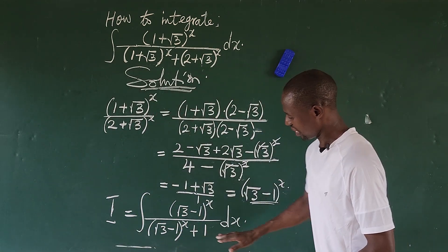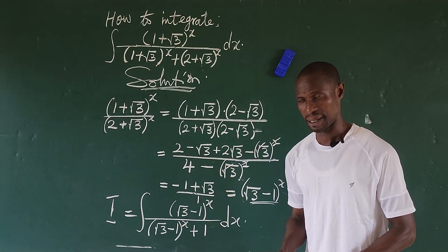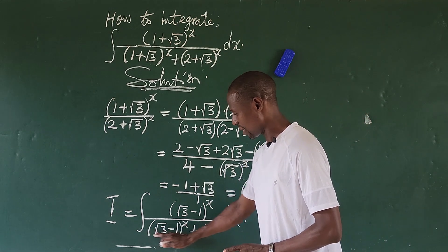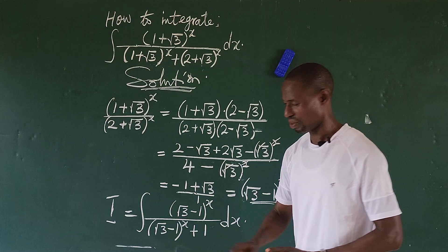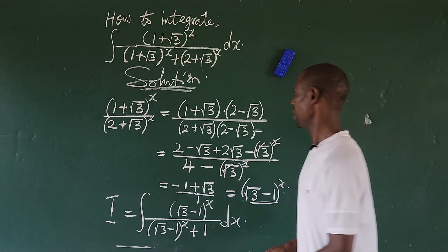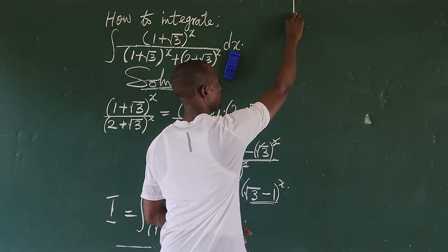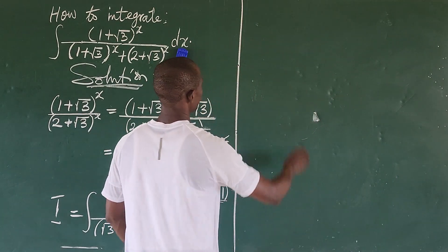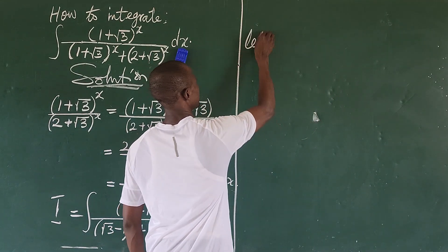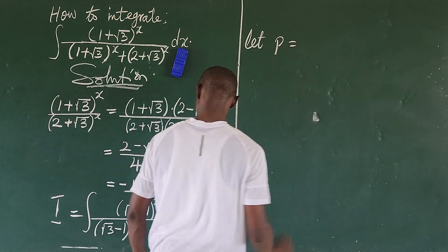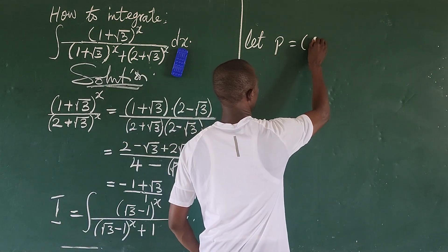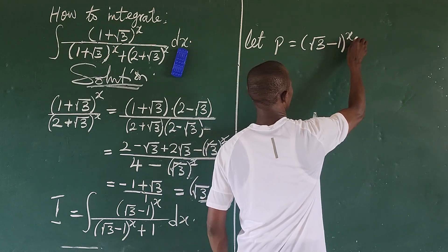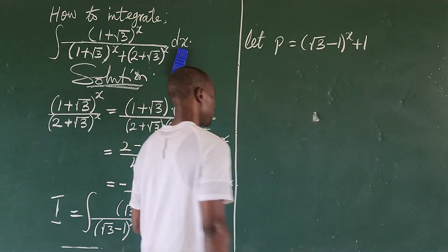So from here what we do is easy. Here we're going to do a simple substitution. I'm going to use an alphabet to represent the whole of what we have at the denominator. So let's do our substitution. Let p be equal to (√3 - 1)^x + 1.